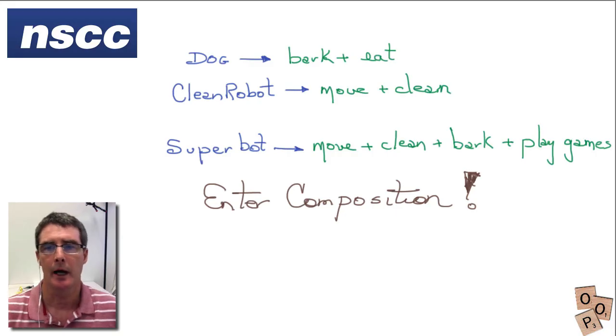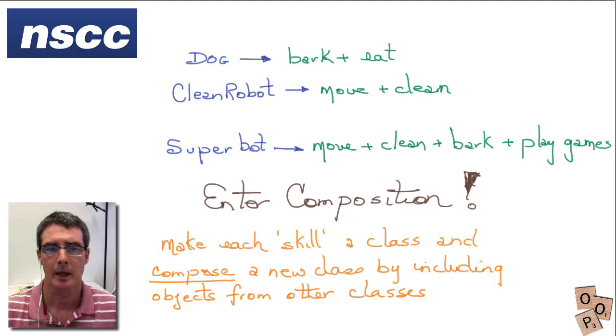Well here's where a composition can come to the rescue. And so what we're going to do is we're going to make each of these things, these skills, a class. And then we're going to compose a new class by including objects from these other skill classes that we've created. So let's look at how this works.